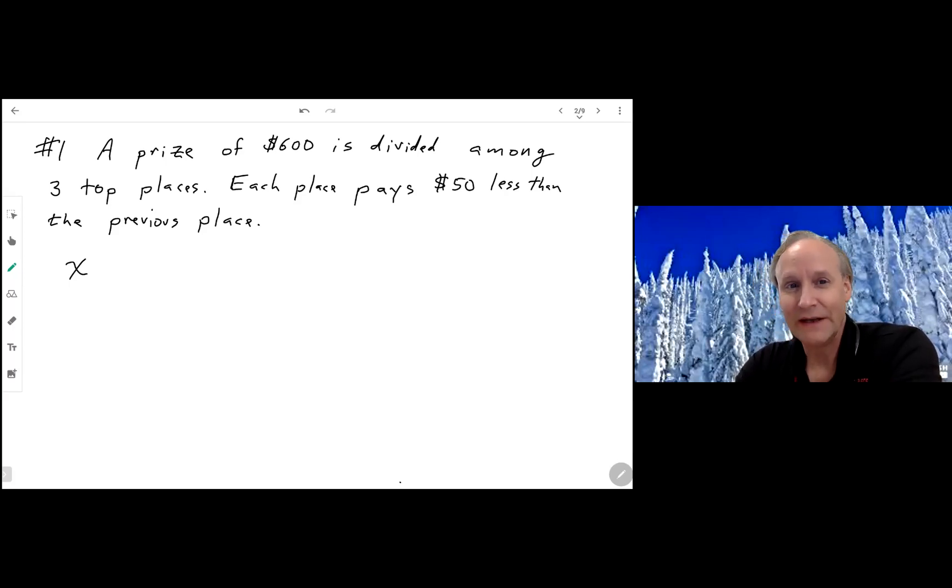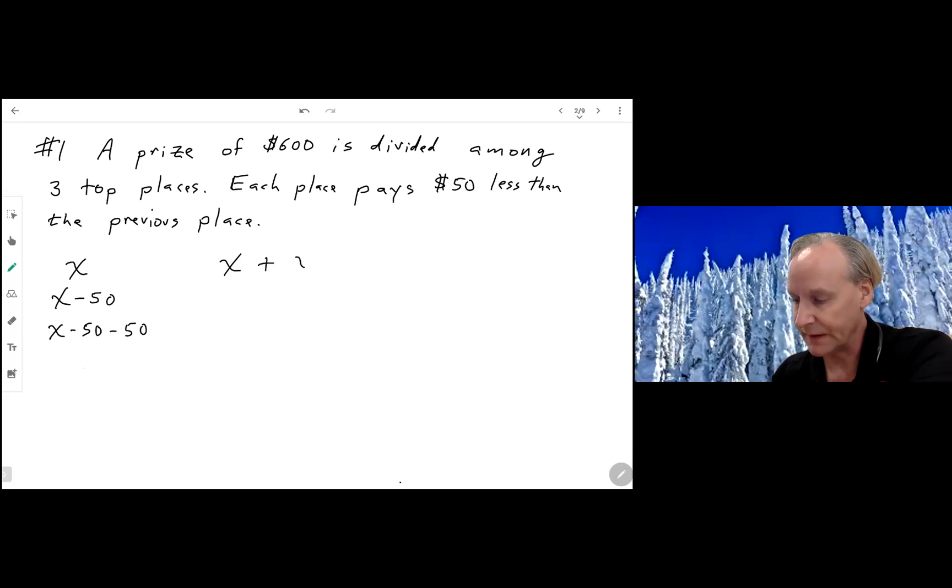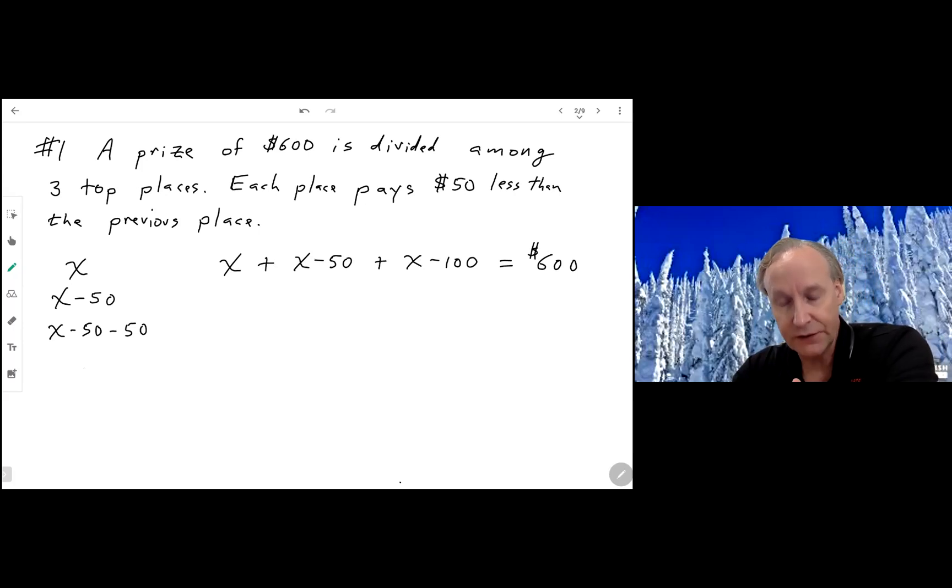And the big trick here is remember less than means reverse subtraction. And so first place pays X dollars. Second place then pays X minus 50. Remember less than means reverse subtraction. And third place pays $50 less than second place. And that is X minus 50 minus 50 more. So we're looking at three places. Our first place is X plus second place is X minus 50 plus third place, which is X minus 100. And we get a total of $600 paid out.